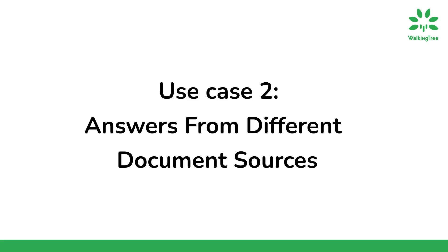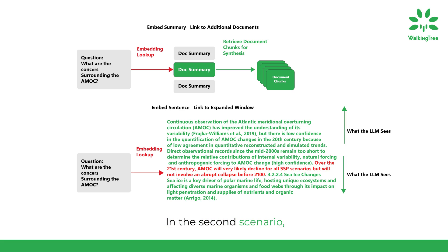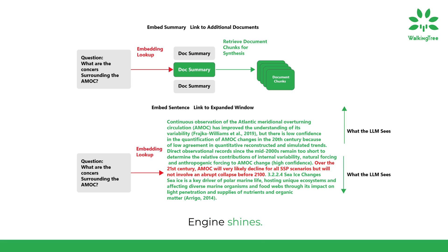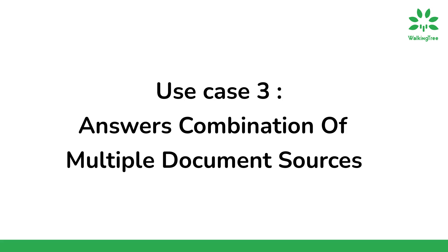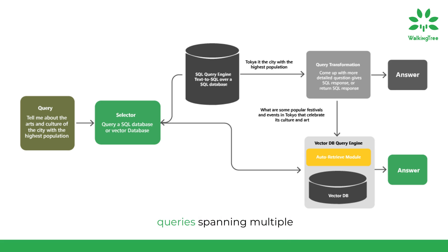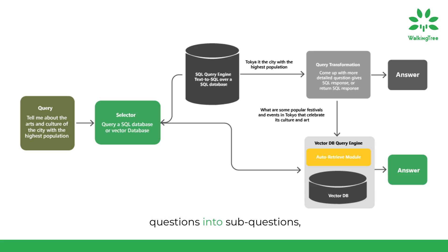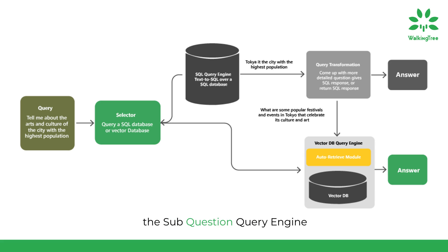In the second use case, where your query demands information from various document sources like FAQs, fund details, and market reports, a custom router query engine shines. It contains predefined query engines, selecting the right source based on context. The third use case tackles complex queries spanning multiple document sources. A multi-step query engine excels by breaking down intricate questions into sub-questions, sourcing responses efficiently. Alternatively, the sub-question query engine navigates this challenge by dividing the question into smaller, specific queries, then combining all answers for a complete response.